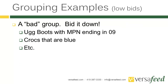As a last example, we're going to talk about products that are doing poorly — what we call a 'bad group.' If you had Ugg boots with an MPN ending in 09, as in year 2009, and those aren't selling very well, you can make groups that move these out of your primary groups and bid them to a penny or whatever else you wanted.